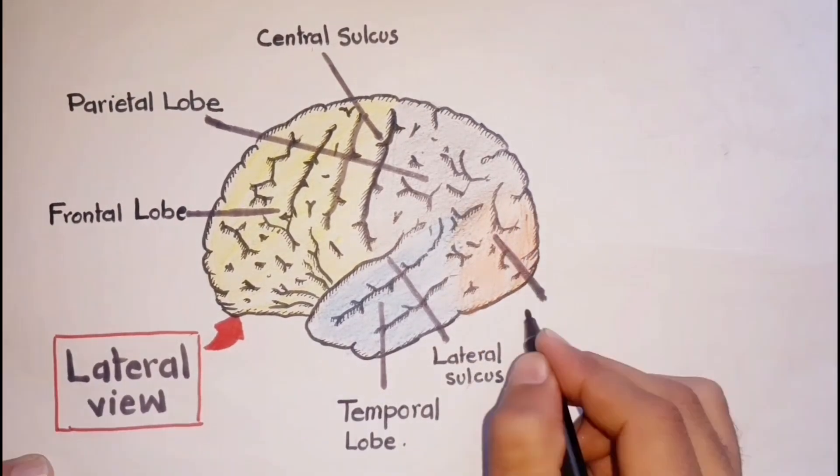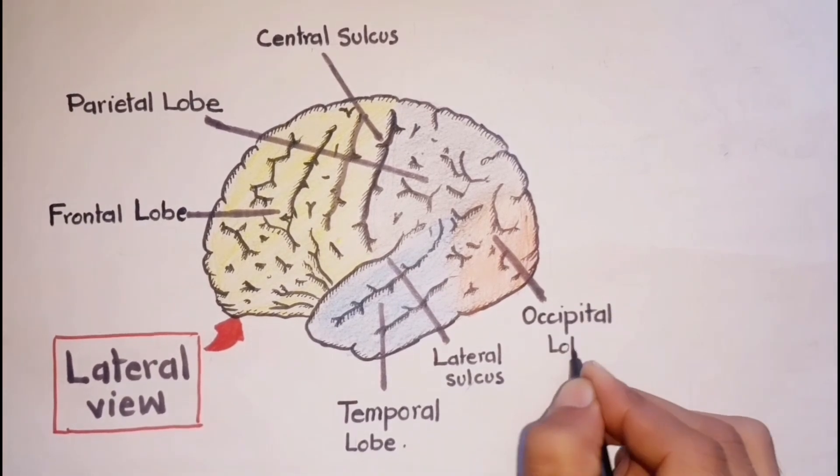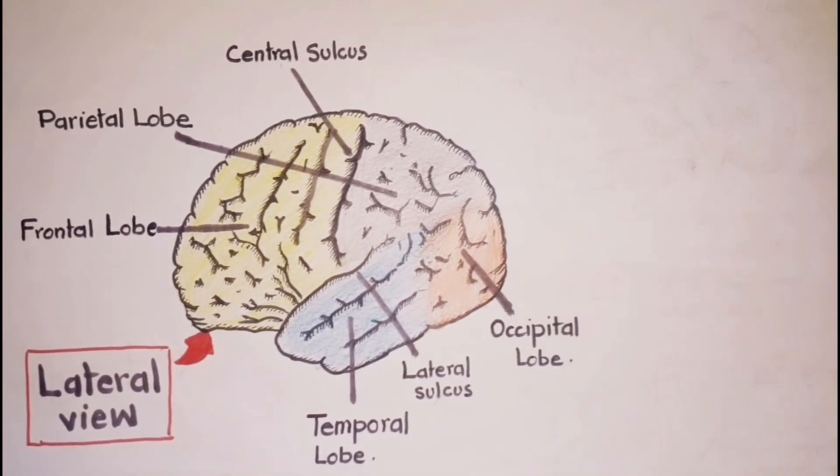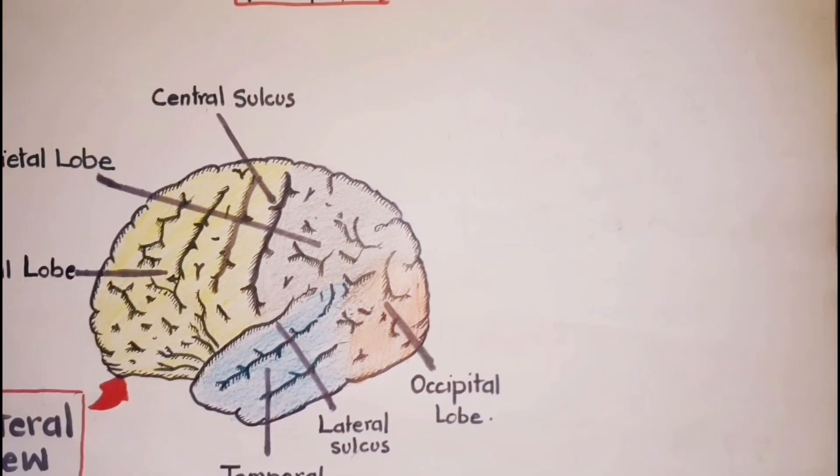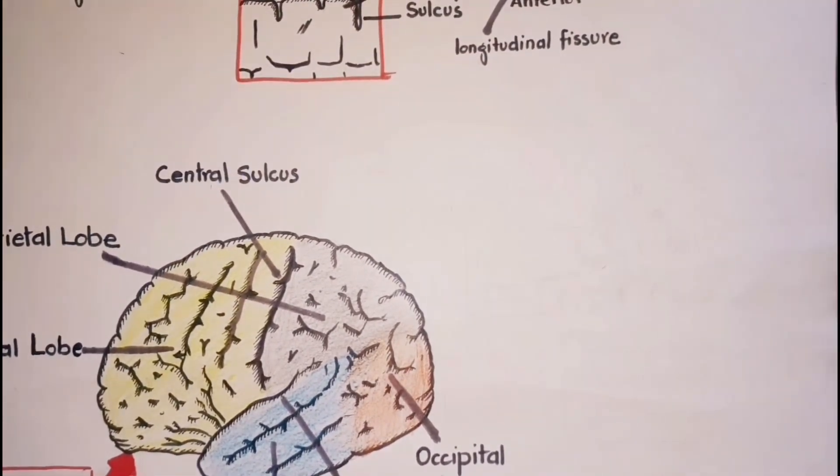This lobe is called the occipital lobe. It forms the posterior part of each cerebral hemisphere. The boundary between the occipital lobe and the parietal and temporal lobes is not distinct.